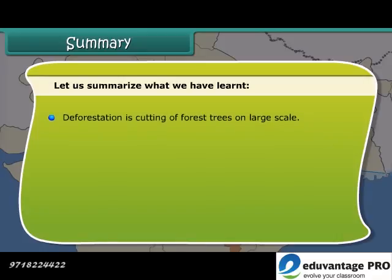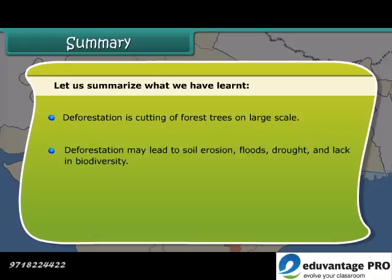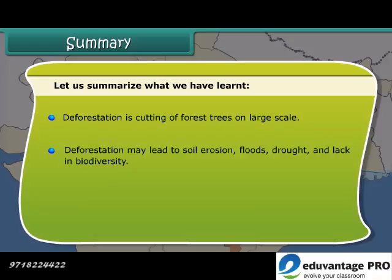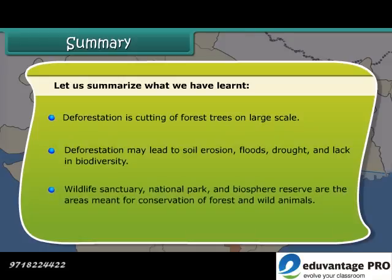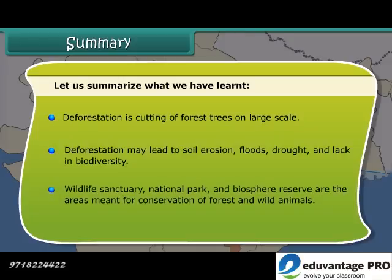Deforestation is the cutting of forest trees on a large scale. Deforestation may lead to soil erosion, floods, drought, and loss of biodiversity. Wildlife sanctuaries, national parks, and biosphere reserves are the areas meant for conservation of forests and wild animals.